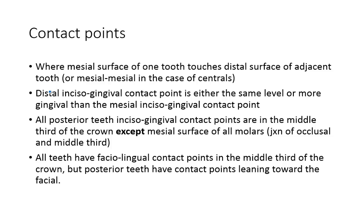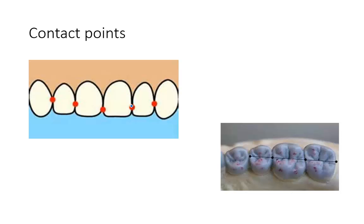Some rules of contact points: the distal incisal-gingival contact point is either the same level or more gingival than the mesial incisal-gingival contact point — and this is for anterior teeth. For the maxillary central, the distal contact is slightly more gingival than the mesial contact. The trend continues: for the lateral incisor, the distal contact point is more gingival than the mesial. As you move distally, the contact points get closer to the gingiva; moving mesially, they get closer to the incisal edge.